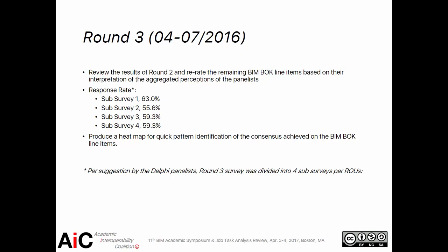Round three took place between April and July 2016. We asked panelists to review the results of round two and re-rate the remaining BIM Body of Knowledge line items based upon their interpretation of the aggregated perceptions of the panelists. We also took feedback from panelists who noted the second round questionnaire was too long, so we created four sub-surveys divided by level of implementation instead of one gigantic survey. Response rates were: sub-survey one 63%, sub-survey two 55%, sub-survey three 59%, and sub-survey four 59%.